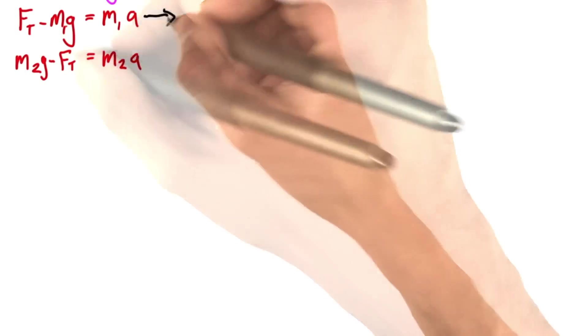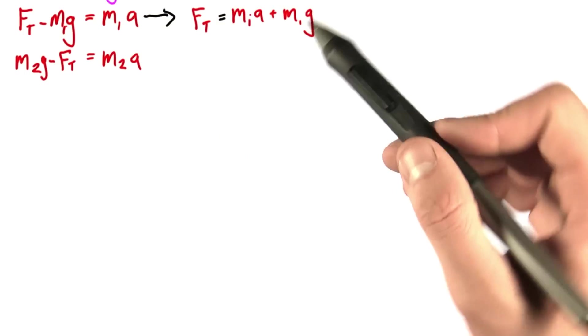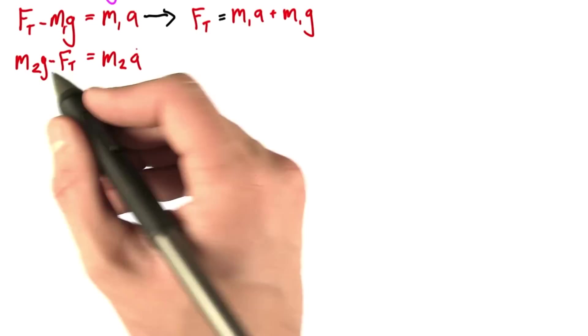So let's take this equation. If I move this term to this side, I find that the tension is equal to m1a, and the a is still unknown, plus m1g. Why don't I plug this in, this value of the tension, into here?